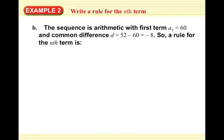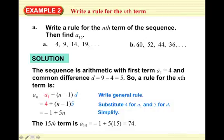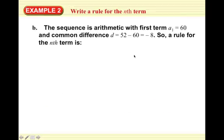Now the numbers get smaller, so we're adding a negative number. If we do 52 minus 60, we get negative 8 — that makes sense: 60 plus negative 8 is 52, 52 plus negative 8 is 44, 44 plus negative 8 is 36. So A1 is 60 and D is negative 8.